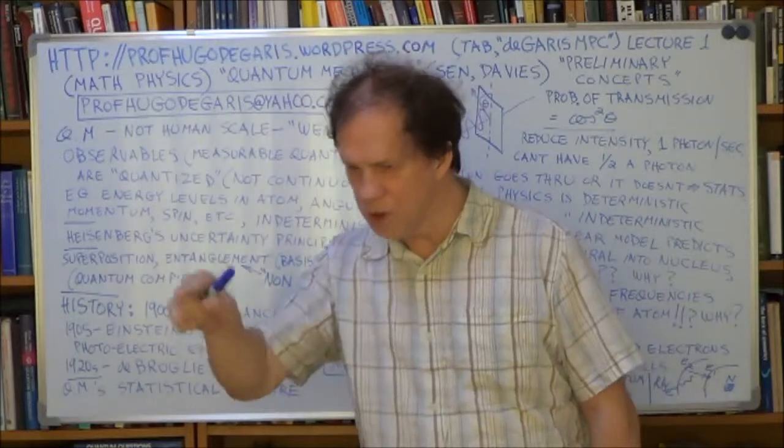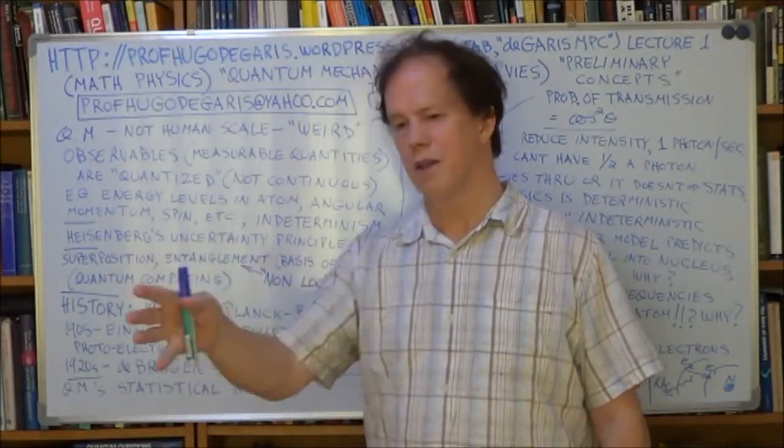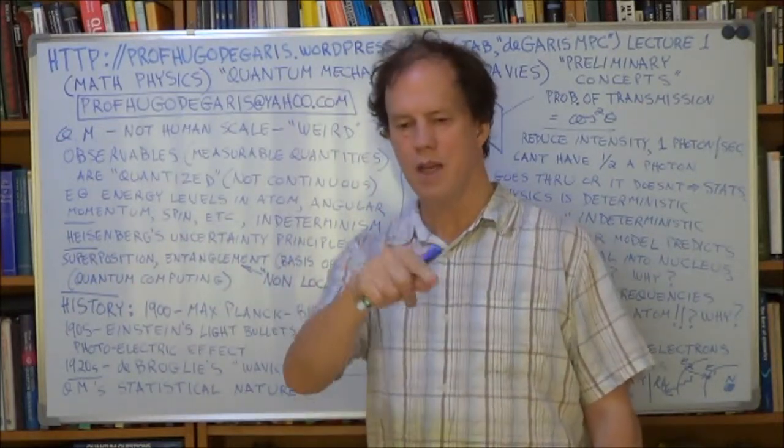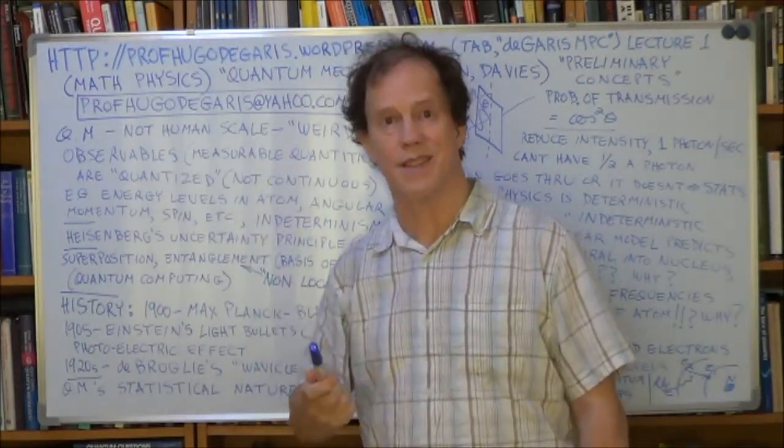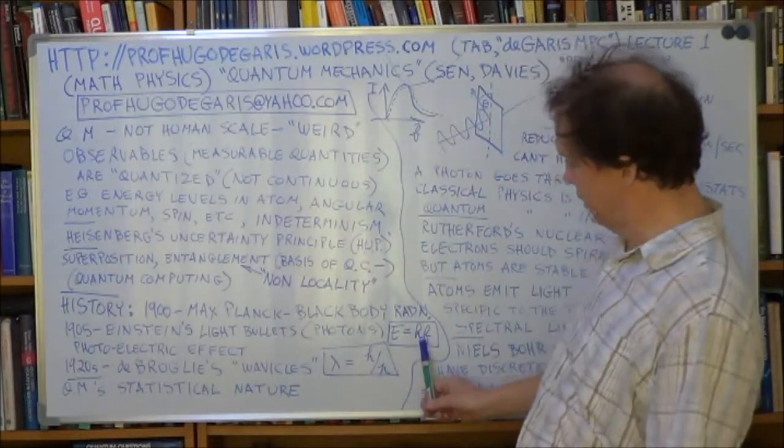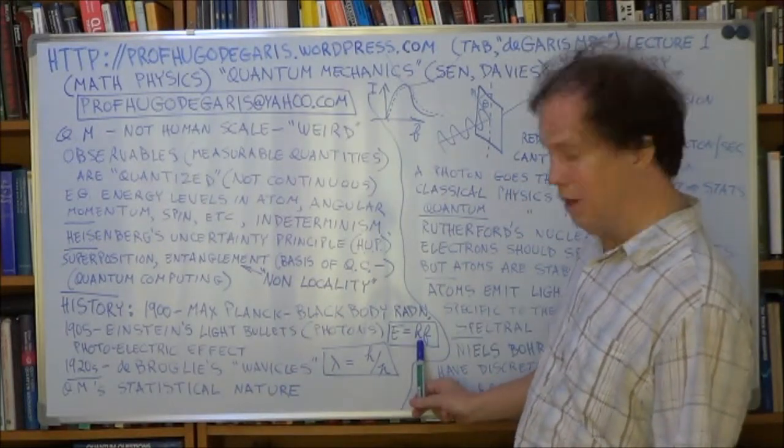And then the constant, so e is proportional to f, but to make it an equation, e equals some constant times f. That constant became known later as Planck's constant. And here it is. Here's h.